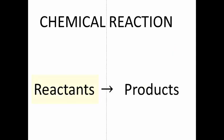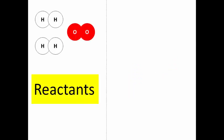The chemicals we start with are called reactants. In this example, there are two reactants: hydrogen and oxygen — two types of reactants. Hydrogen gas, two molecules of H2 in this case, plus one molecule of oxygen gas. So hydrogen and oxygen react together.